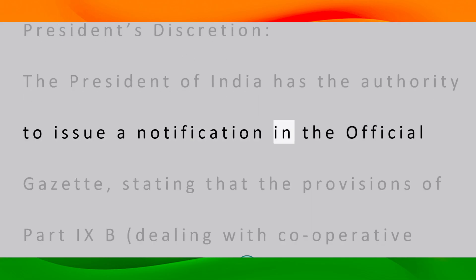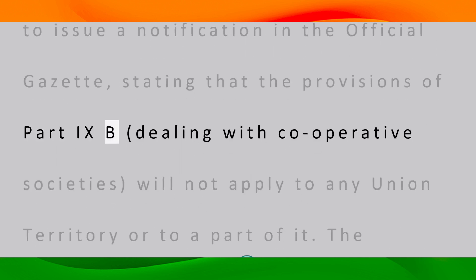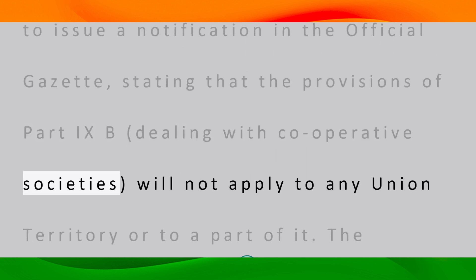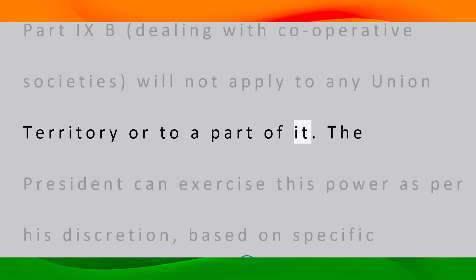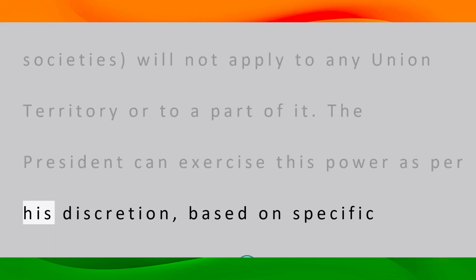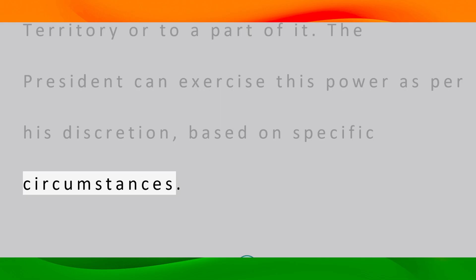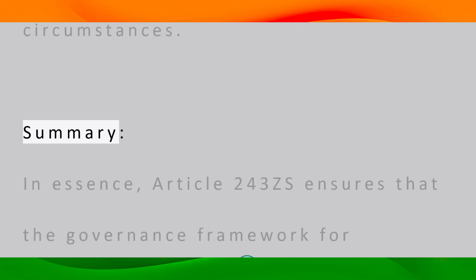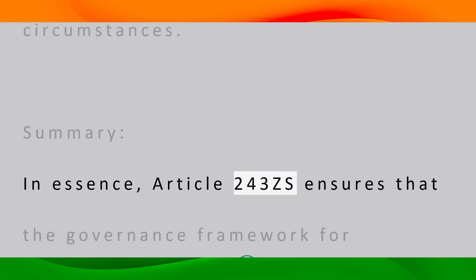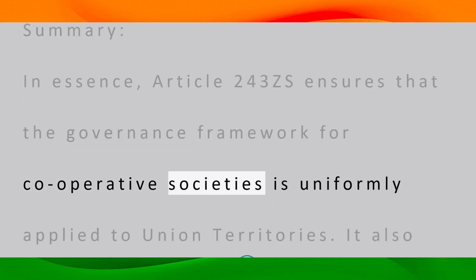The President of India has the authority to issue a notification in the official gazette stating that the provisions of Part 9B dealing with cooperative societies will not apply to any union territory or to a part of it. The President can exercise this power at his discretion based on specific circumstances.